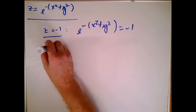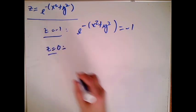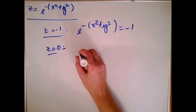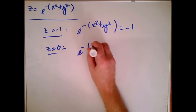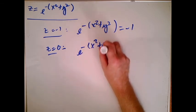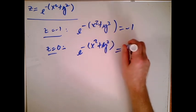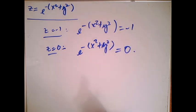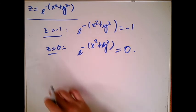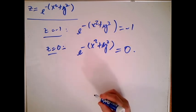What if I try to chop at height zero? I'm going to get e to the minus x squared plus y squared equals zero. What happens this time? Well, you can't take e and raise it to anything and get zero. So if I chop at height zero, I still don't get anything.